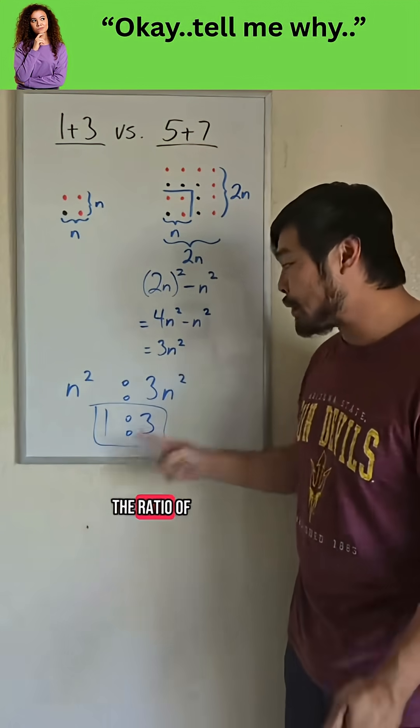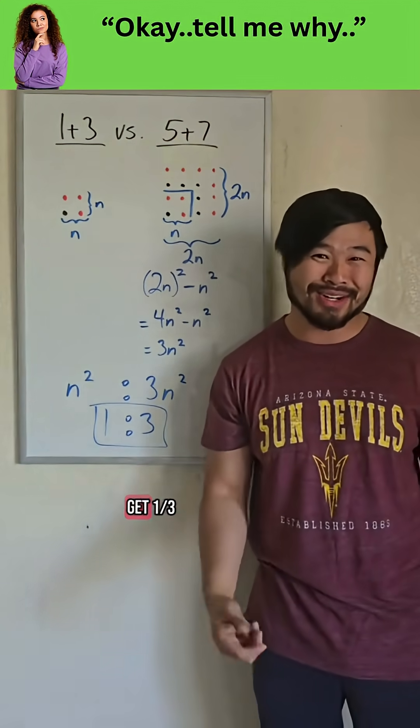So the sum of the first n positive odd numbers is given by n squared. And the sum of the next n positive odd numbers is given by three n squared. So we have the ratio of n squared to three n squared, which simplifies to a one to three ratio. So that's why we would always get one third.